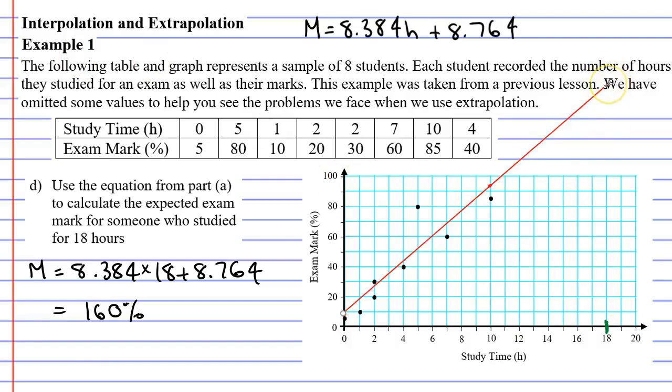So this must be up around 160%. And this is where we start getting problems when we try to use extrapolation. In fact, we are asked to talk about this in question E.